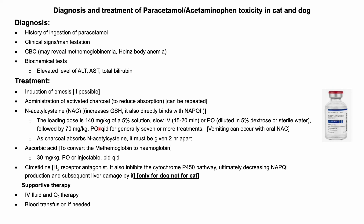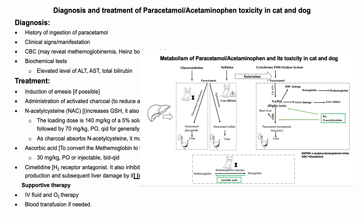The main drug of choice is N-acetylcysteine. Note that oral administration of N-acetylcysteine may cause vomiting. Also, if activated charcoal has been given, N-acetylcysteine should be administered two hours later, otherwise the charcoal will absorb the N-acetylcysteine. N-acetylcysteine acts as a glutathione precursor, increasing glutathione levels in the body, helping neutralize NAPQI, and preventing oxidative damage to RBCs and the liver. It also directly binds with NAPQI to eliminate it. Ascorbic acid is also recommended to reduce methemoglobin levels by converting it back to hemoglobin.